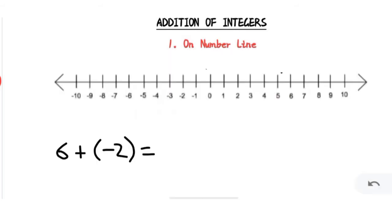Let's take one more example: 6 + (-2). First we see where 6 is, and since minus 2 is a negative integer we will move two steps towards the left — 1, 2 — which brings us to the answer 4.